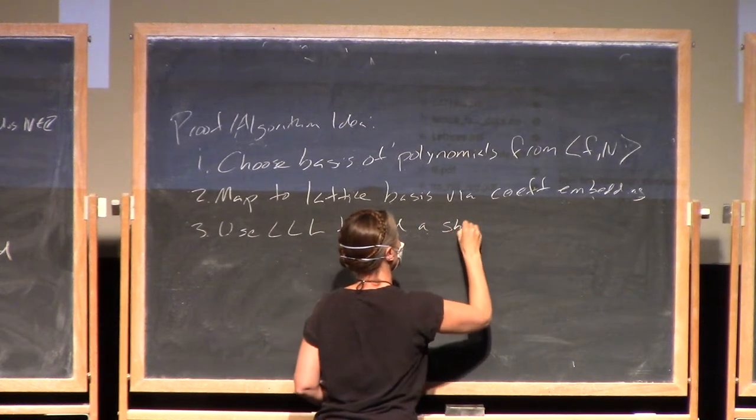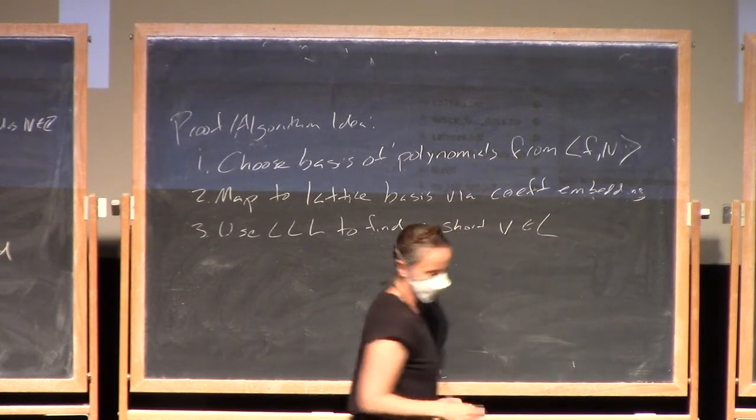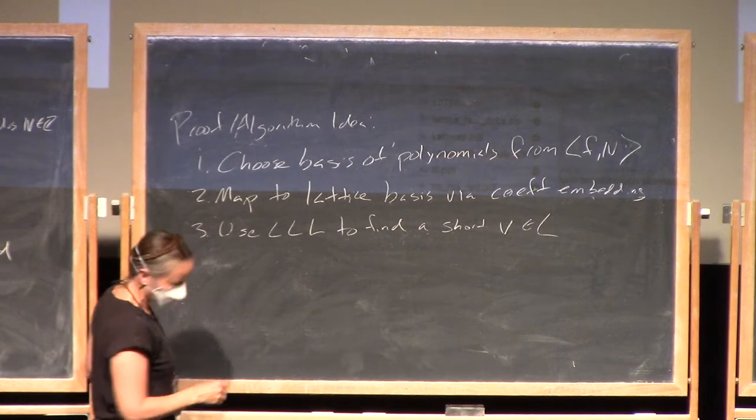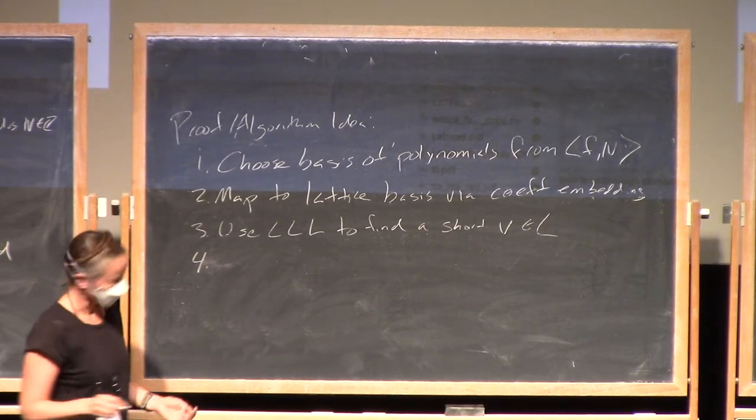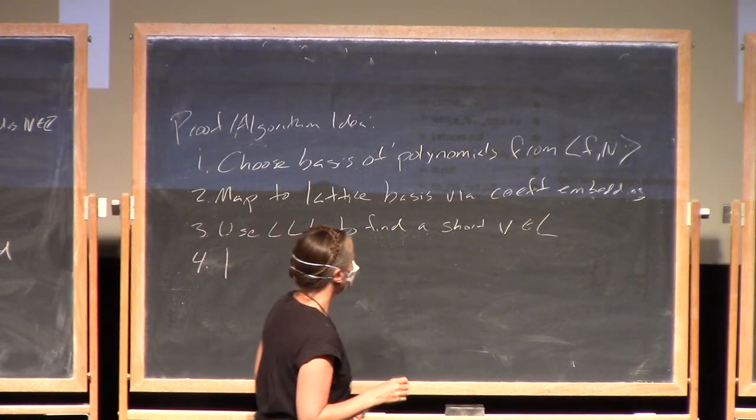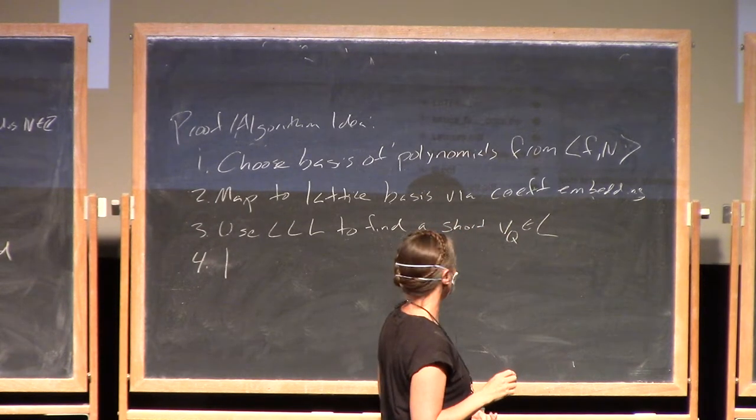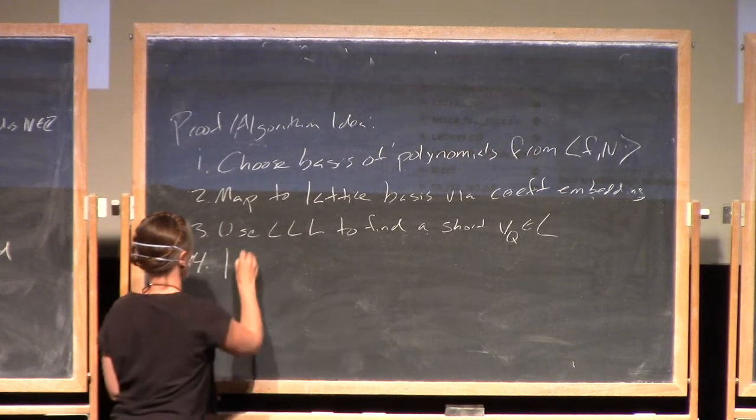We have a short vector in our lattice and now we need to actually show that it works. So I'll call this q, this is going to be our target polynomial.